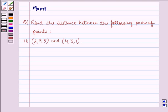Hello and welcome to the session. My name is Mansi and I am going to help you with the following question. The question says, find the distance between the following pairs of points. The first part is (2, 3, 5) and (4, 3, 1).